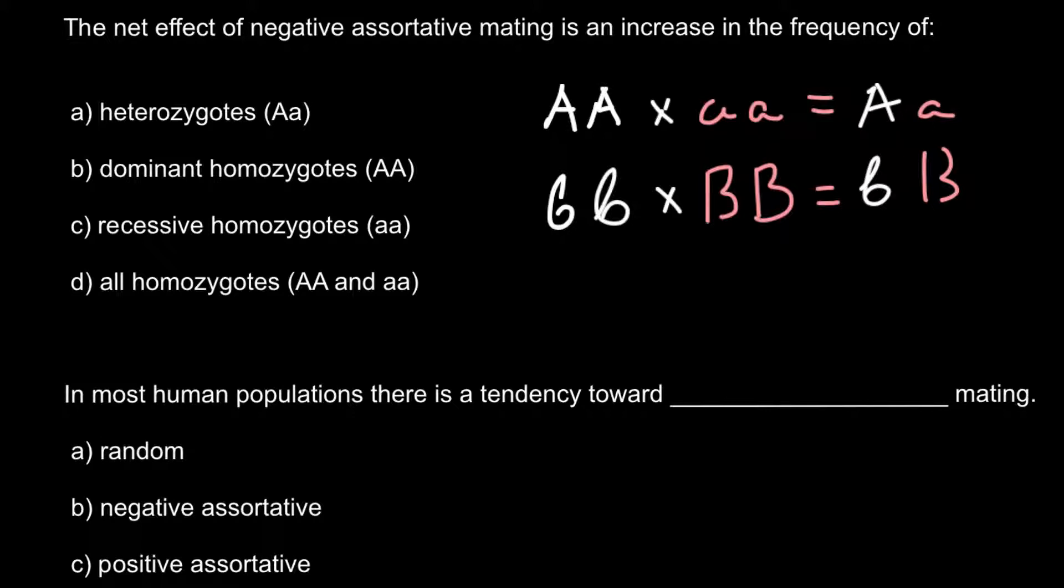And we call negative assortative mating when someone chooses his mate from a group who would be distant from his group. For example, Japanese would mate with Chinese or with Caucasian. So such a type of mating we call negative assortative mating.